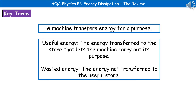Welcome to our review on energy dissipation. When we refer to a machine, we're talking about something that's transferring energy for a purpose. There are two terms we need to know associated with this. The first is useful energy, which refers to the energy transferred to the store that lets the machine carry out its purpose. The second is wasted energy, which is the energy that's not transferred to that useful store.